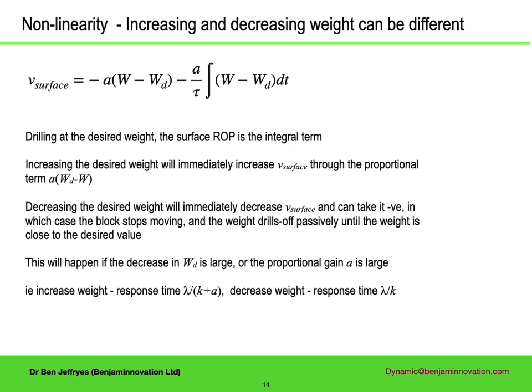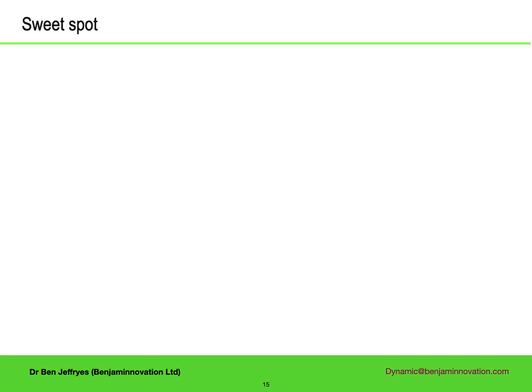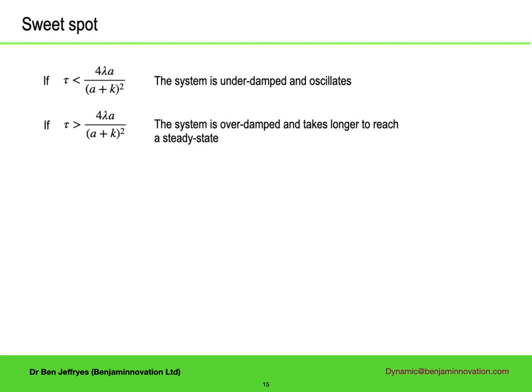So for large a, increasing weight involves one response time involving the proportional gain, but for decreasing weight, only the drilling and drill string parameters matter. Is there an optimum set of parameters? It's subjective, of course, but what would be pleasing would be for the system to converge as fast as possible, and not to overshoot or oscillate too much. This all depends crucially on the integral time. If it is low, the system will be underdamped and oscillate as it converges. If it is high, it is overdamped and takes much longer to reach a steady state.